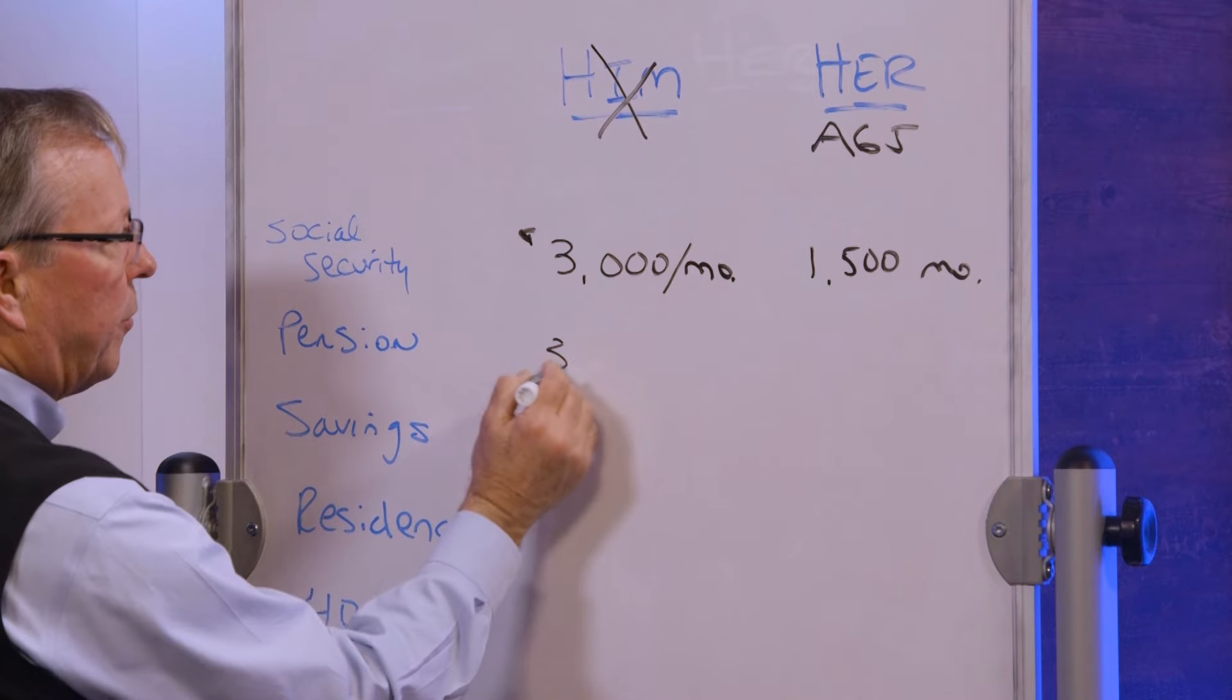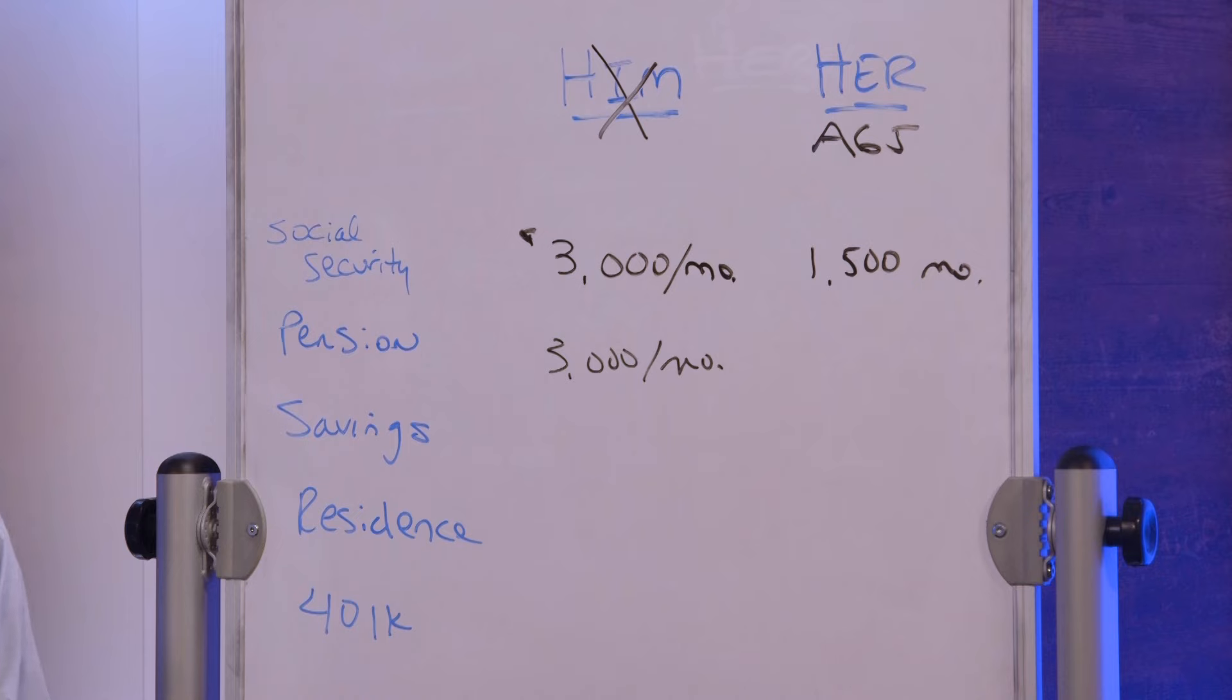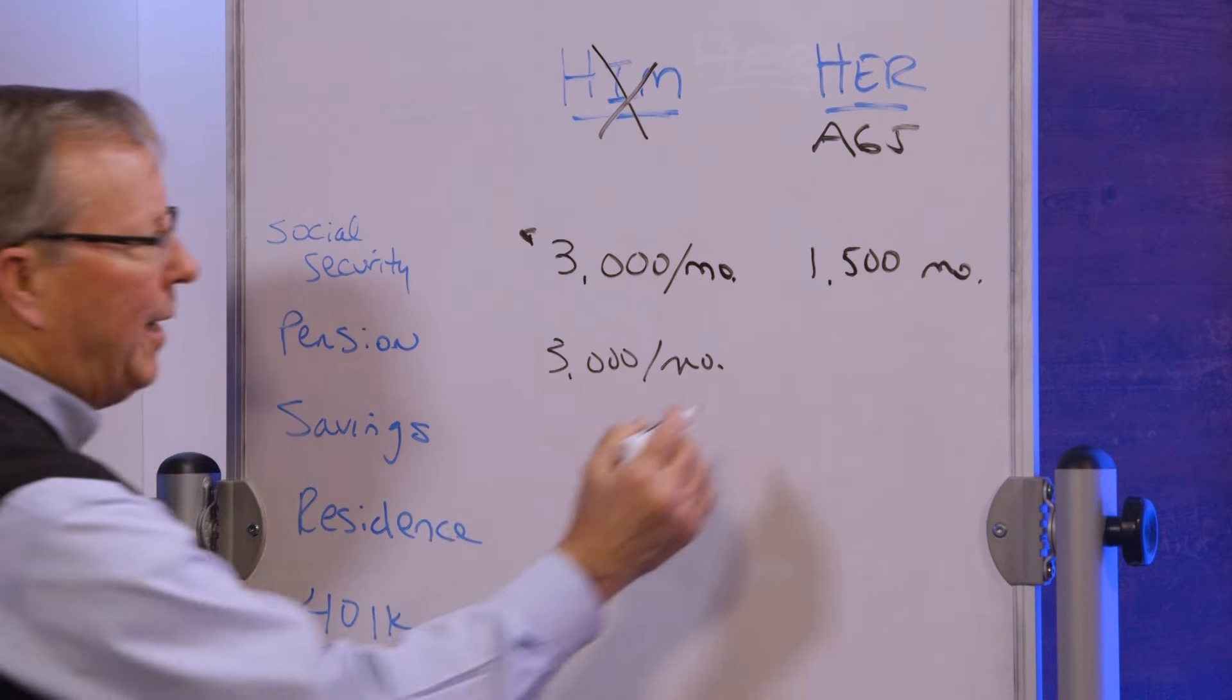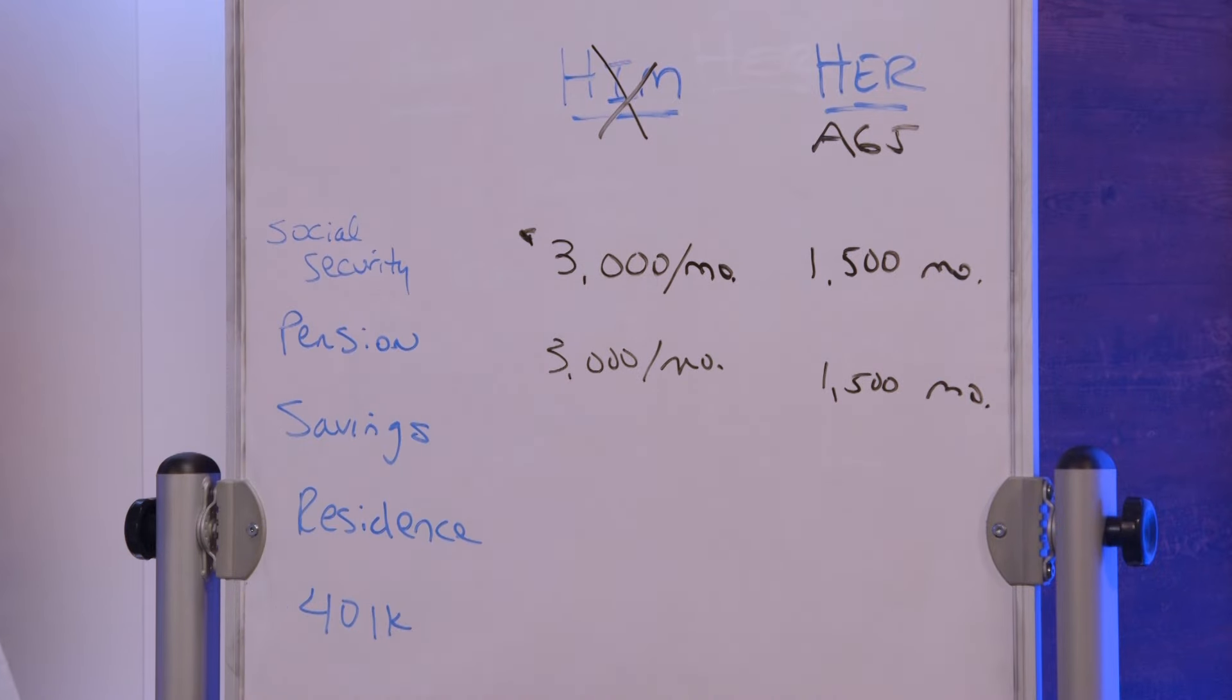He had a pension of another $3,000 a month and he had what's called a 50% survivor option, meaning at his death his wife would get $1,500 a month.